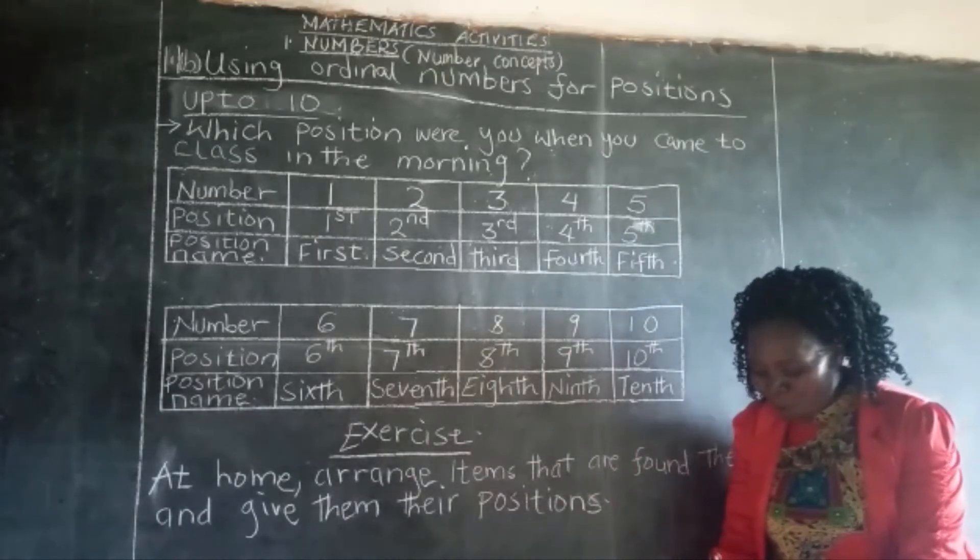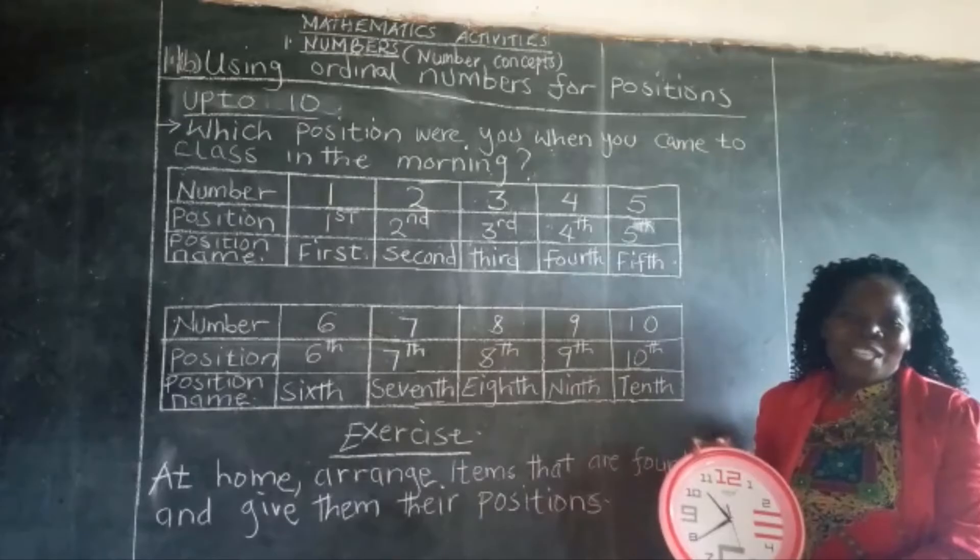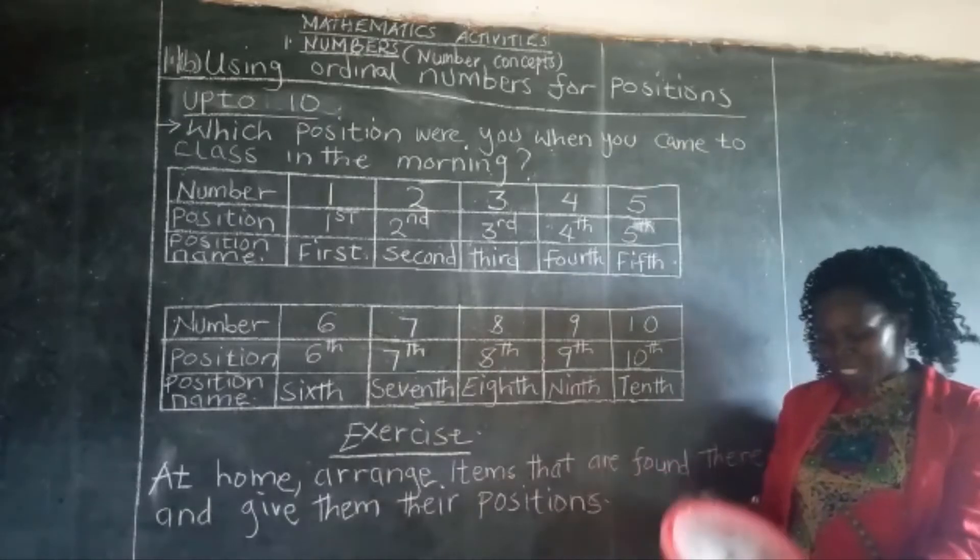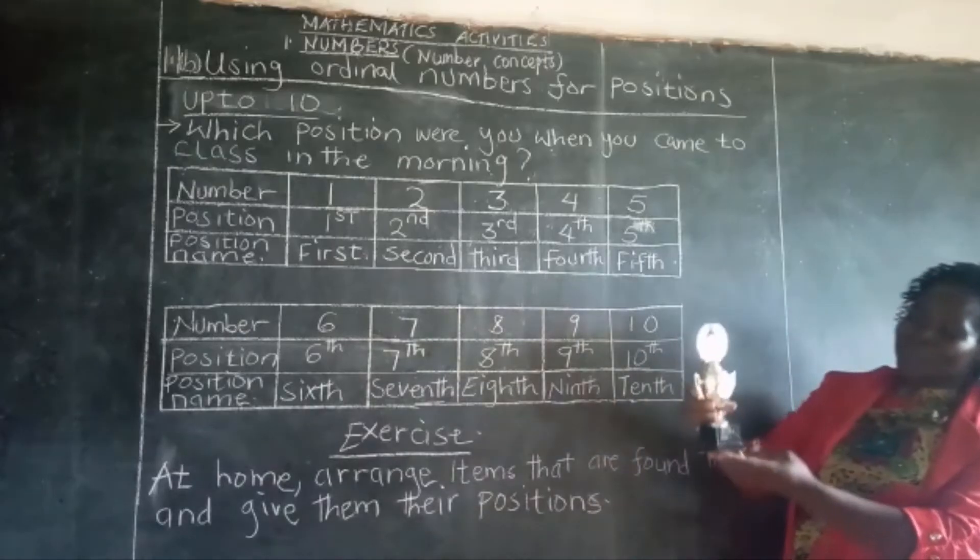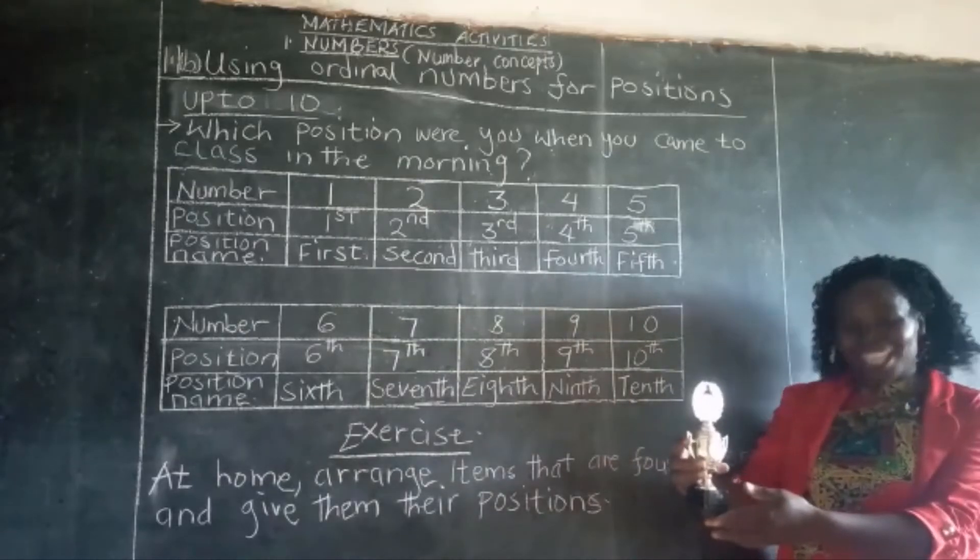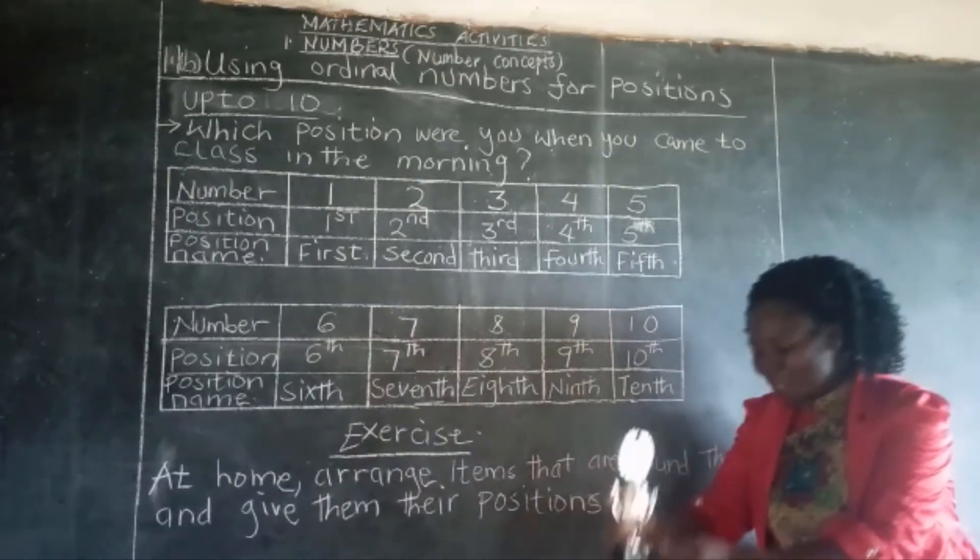Then we have a watch. This watch is in the second position. Also we have a trophy, a very good trophy. The trophy is in the third position.